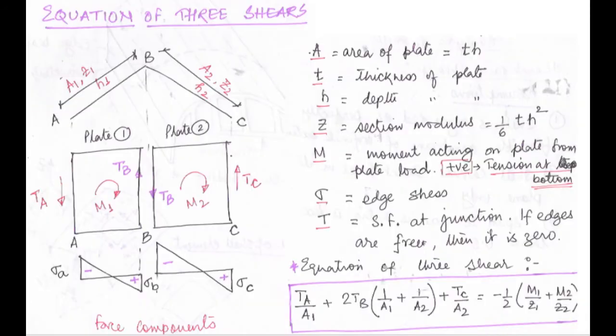Now let us start with the design of the folded plate. We will learn the theory and concept of the equation of three shears — how to find the different shear forces in the folded plate. Please look at the diagram: on the left I have drawn the diagram; on the right is the description. AB and BC form a folded plate structure, with A1, Z1, H1 for part AB and A2, Z2, H2 for part BC.